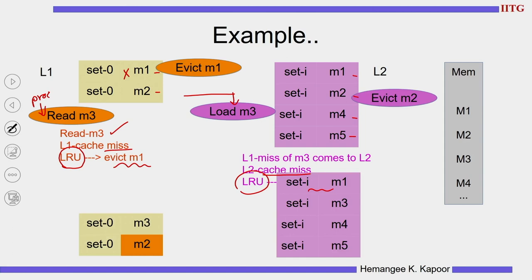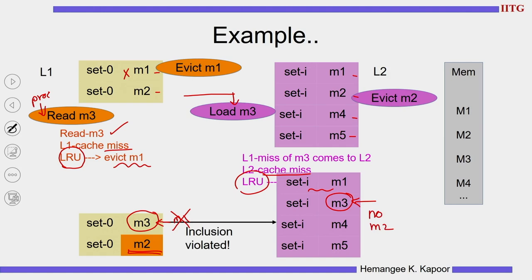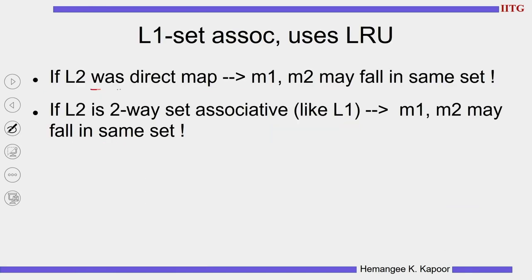After L2 evicts M2 and brings M3: L1 removed M1 and loaded M3; L2 removed M2 and loaded M3. Now M3 is in set 0 of both caches. But M2 is still sitting in L1 while there is no M2 in L2. This violates the inclusion property. Why did this happen? Because of the history-based replacement policy with a set associative L1 cache.